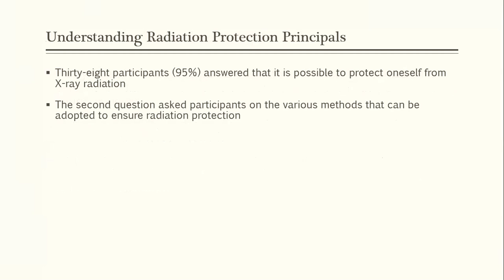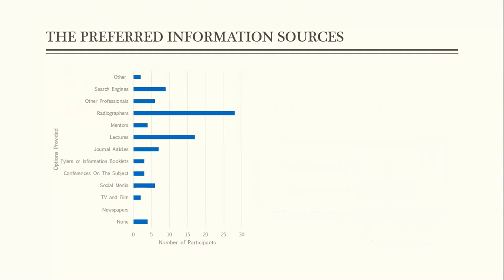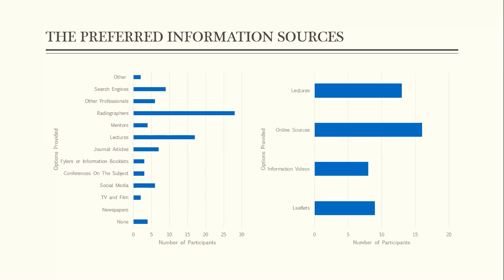Regarding understanding radiation protection principles, when asked whether it is possible to protect oneself from X-ray radiation, 38 participants (95%) indicated that it is possible. When asked about the various methods that would be adopted, most participants chose the correct option. However, one participant selected the incorrect option — by decreasing the distance between the X-ray machine and oneself. When asked regarding preferred information sources, most participants selected reading as the most common source of information and lectures as the second. When asked which methods they would like to use in the future, they selected online sources and lectures.